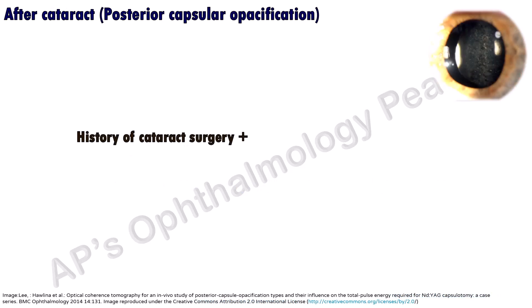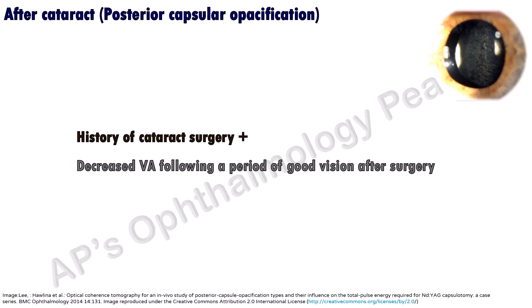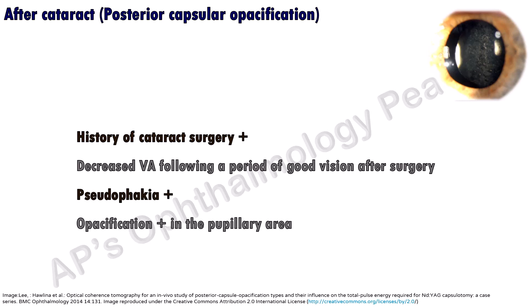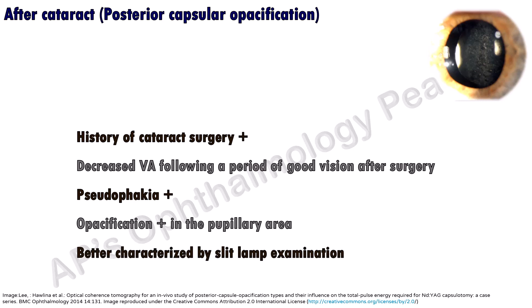Posterior capsular opacification occurs after cataract surgery, so a history of the same will be present. Since an after-cataract develops as a relatively late complication following cataract surgery, the patient gives a history of good vision for some time after the surgery, following which gradual diminution of vision is noticed. There will be evidence of the surgery on examination, and an opacification is seen in the pupillary area, better delineated by slit lamp examination.